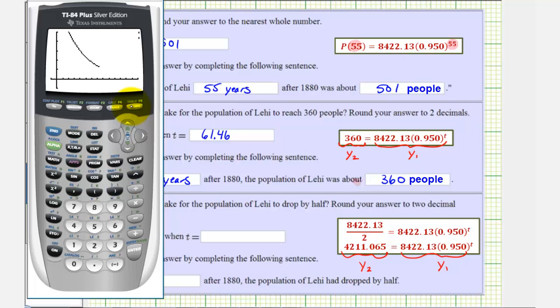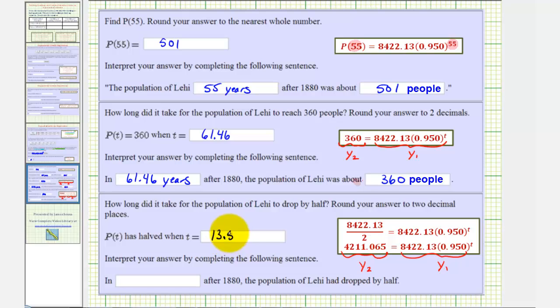There's the model, there's the function value we're looking for. So we're looking for the x-coordinate of this point of intersection. So press second, trace for calculate, option five for intersection, and enter three times. So t would be approximately 13.51, which means in 13.51 years after 1880, the population of Lehigh had dropped by half.